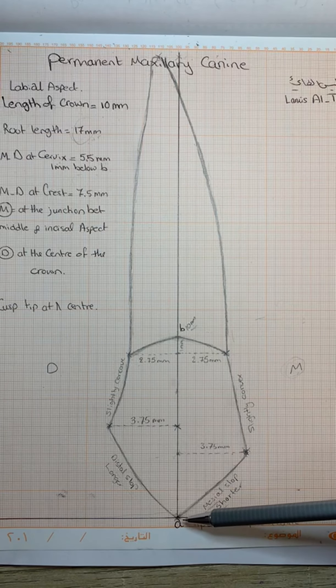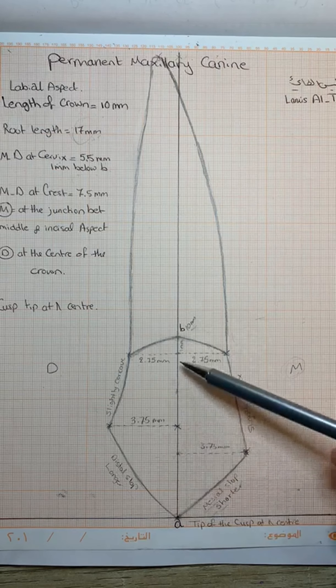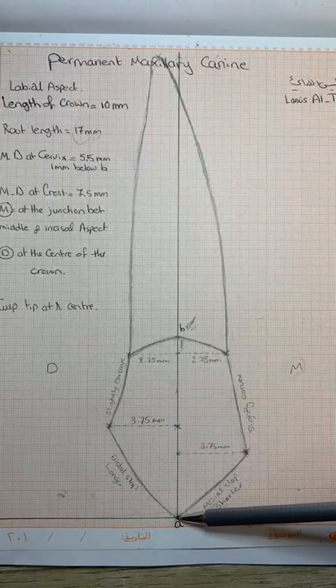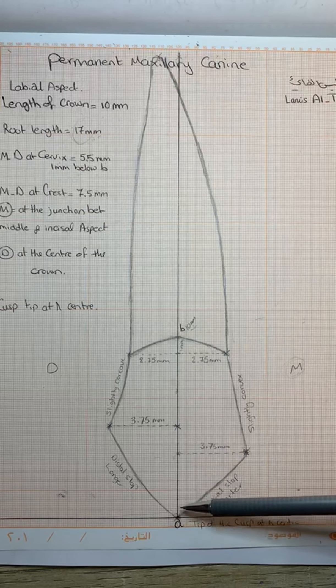The second step is usually to divide the crown into thirds, and every third will be about or less than 3.5 mm. So we have the incisal third, the middle third, and the cervical third.